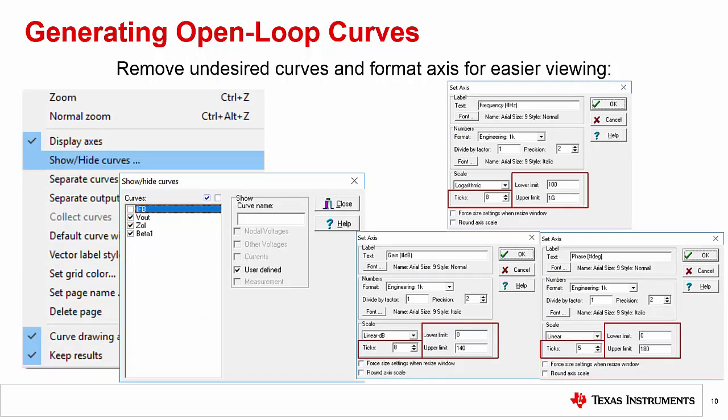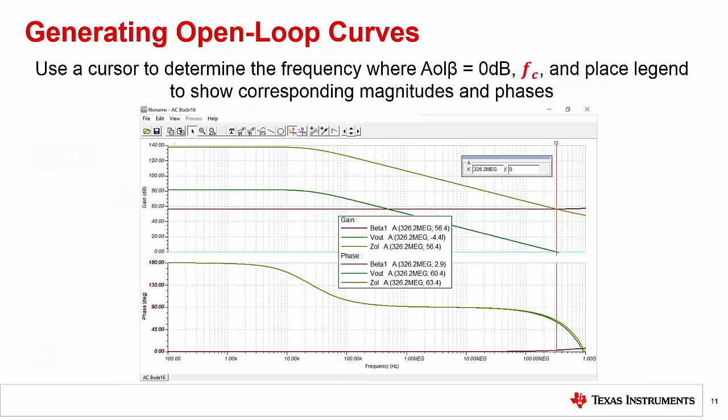Once our ZOL and 1 over beta curves are confirmed, we will reformat our graphs. The unneeded error current, or IFB curve, was hidden and changes were made to the ranges and increments of our X and Y axes. The values that were changed on each axis are highlighted in red boxes and are formatted for easier visibility and analysis. Finally, we will find our phase margin by placing a cursor where our loop gain curve, Vout, has a magnitude of 0 dB.